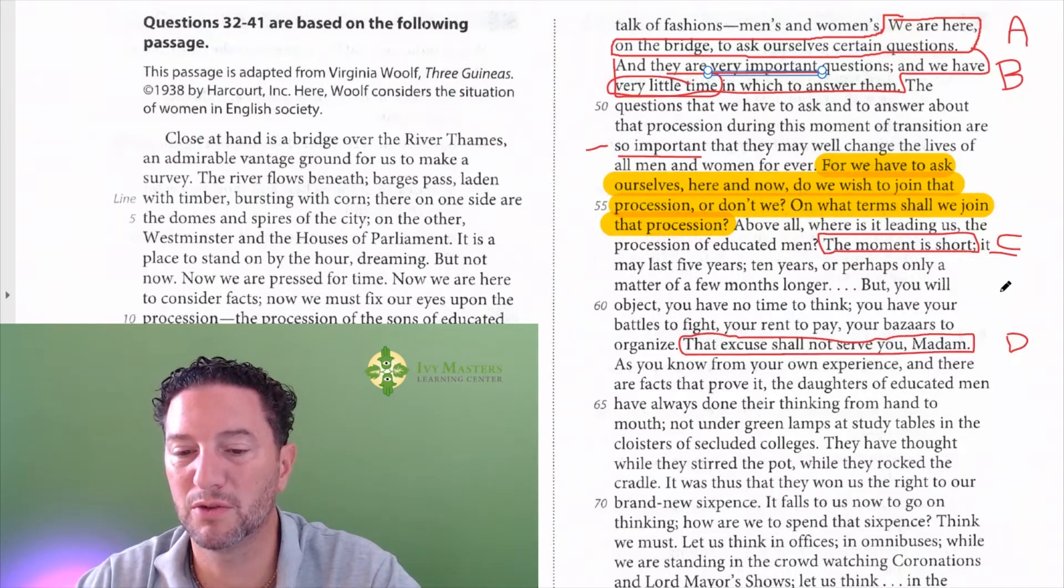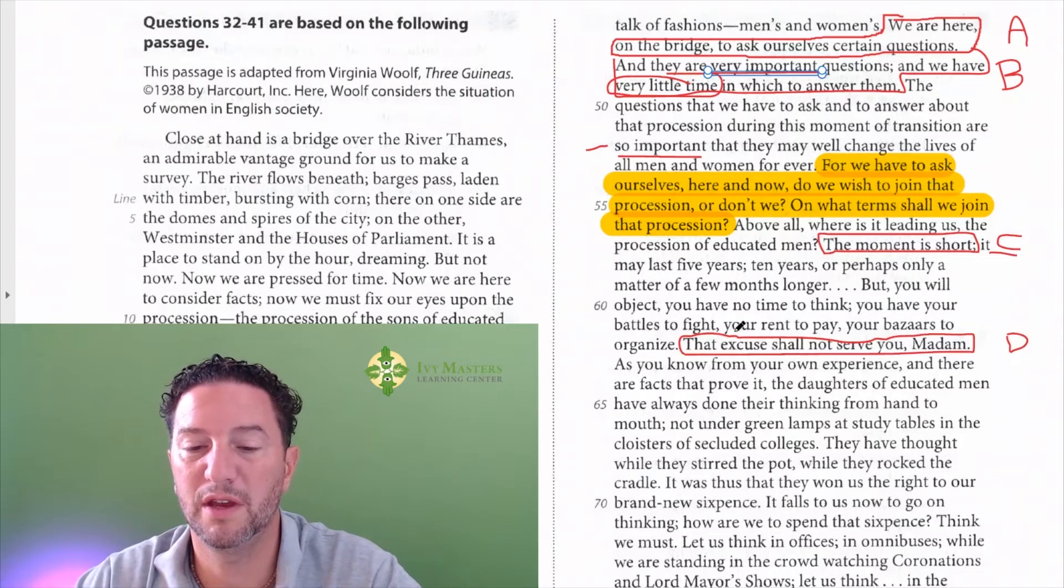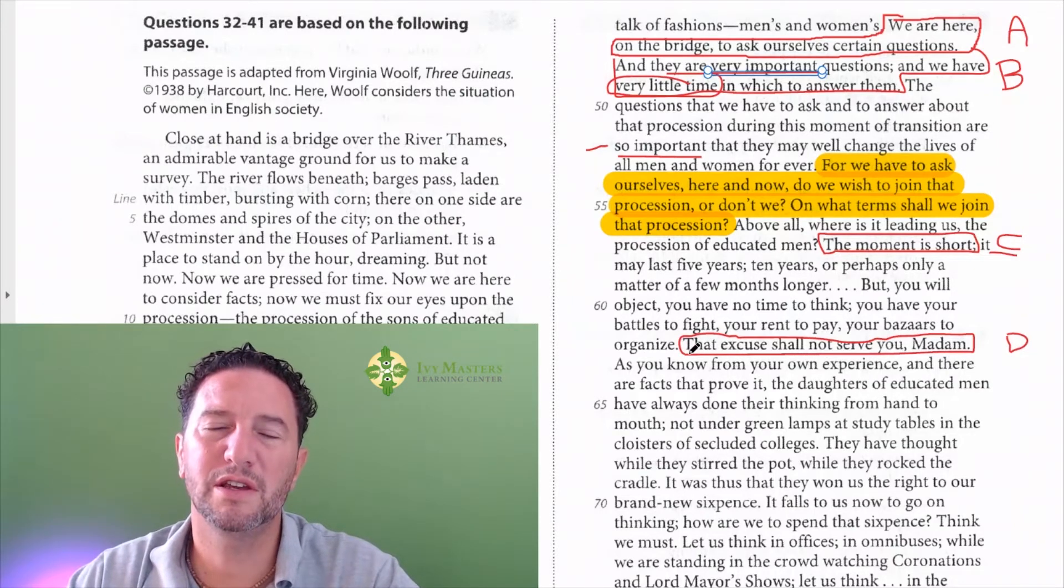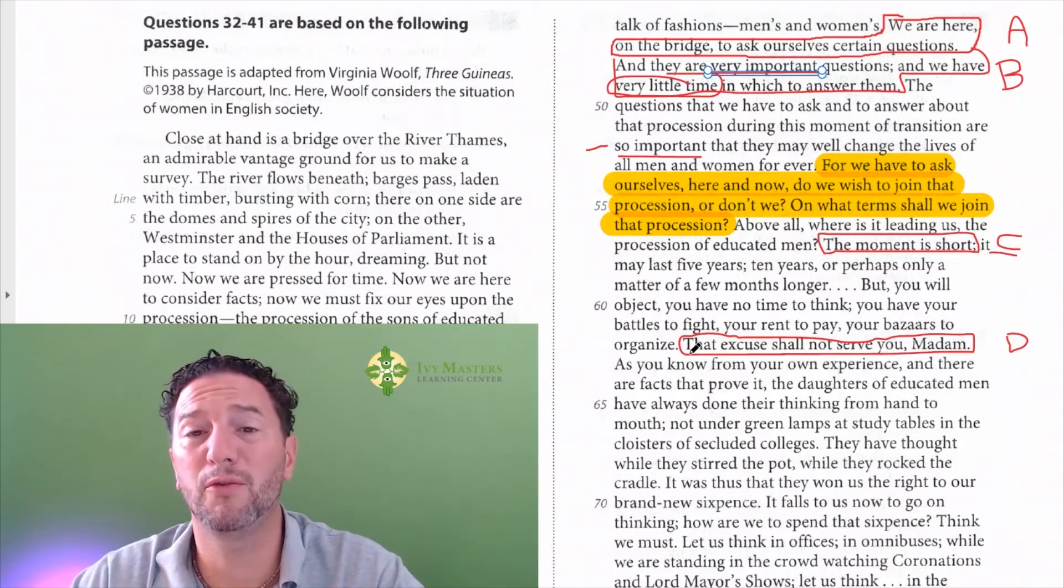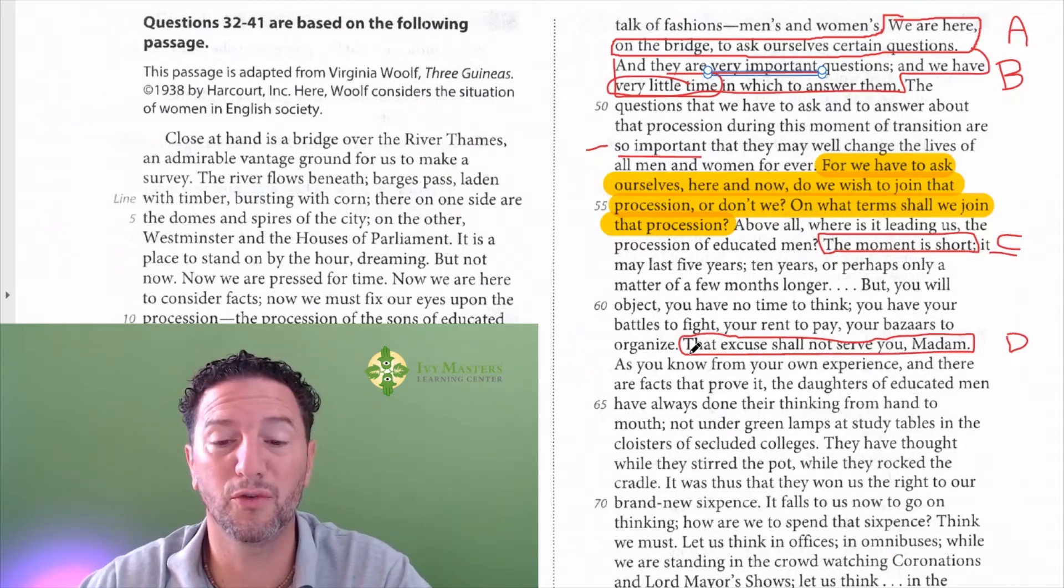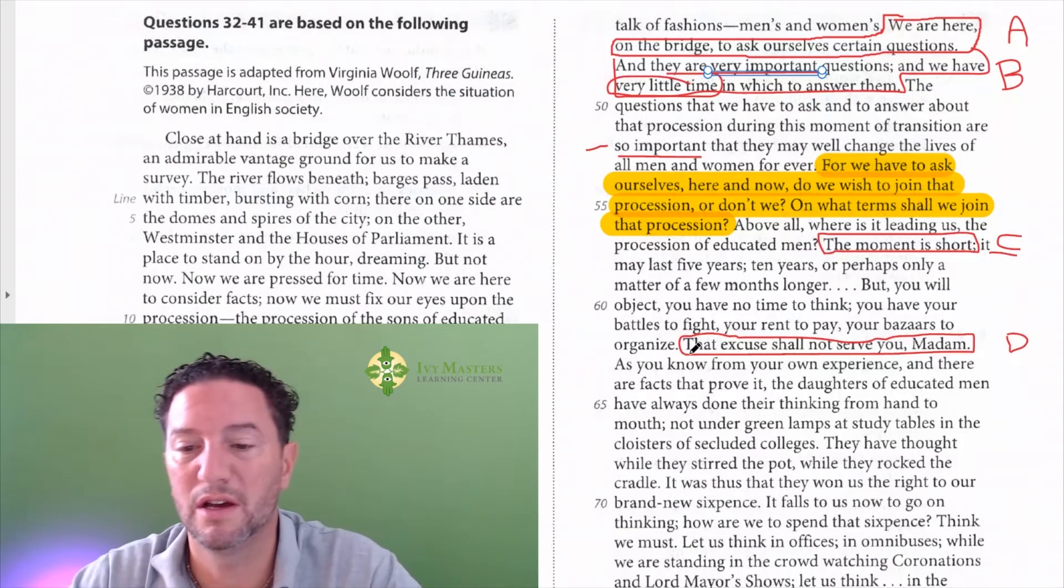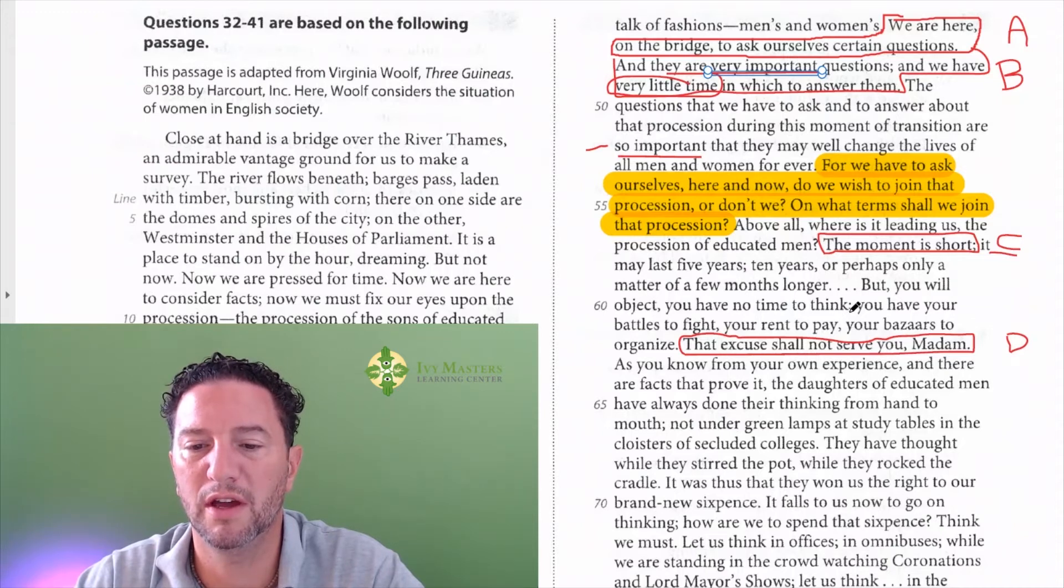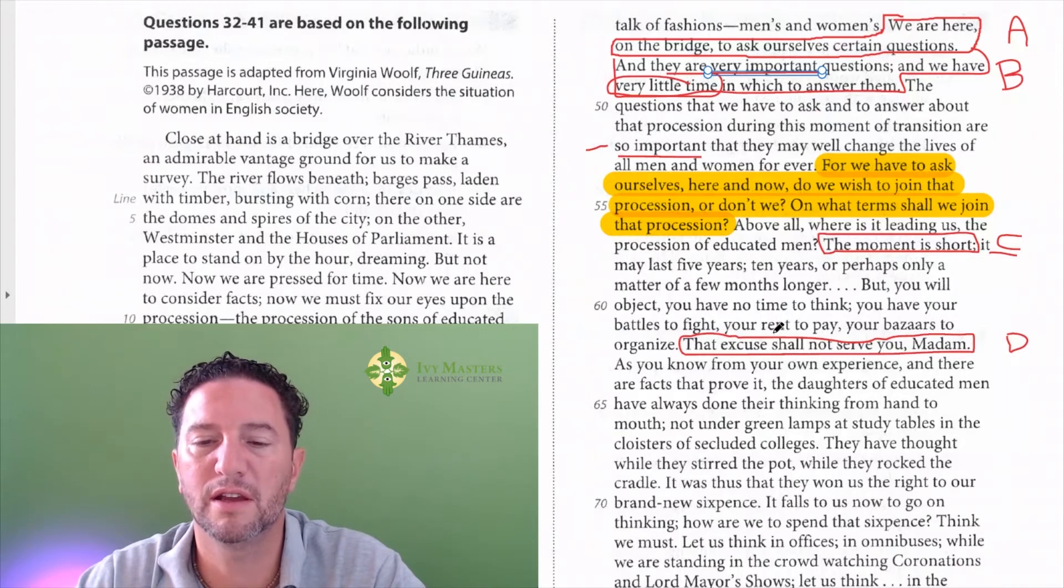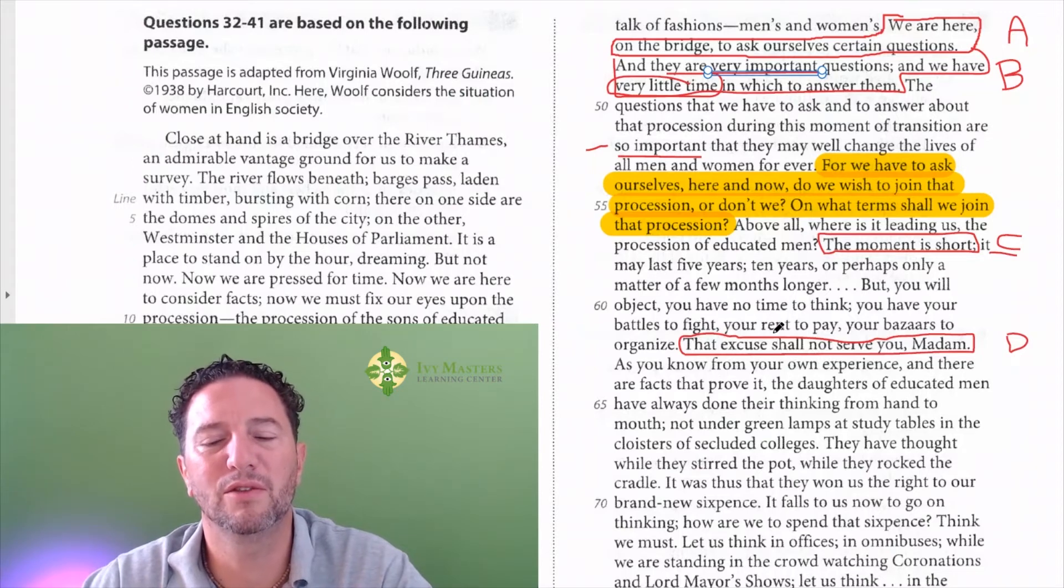Answer choice C, the moment is short. It's only given us one thing and half of an answer. And then answer is D, that excuse will not serve you. Whenever you see the word this or that or these or those, you've got to read before to see what this or that or these or those is referring to. If you've read before that excuse, we would have to see what excuse it is. But you will object, you'll have no time to think, you'll have your battles to fight, your rent to pay, your bazaars to organize. So it's kind of like women are busy and they're not really thinking of breaking into the workforce.